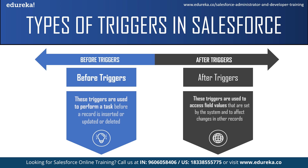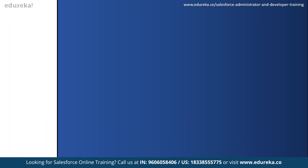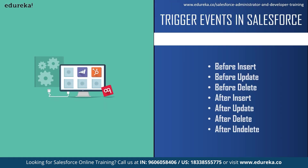After triggers are read-only — you cannot make any changes to them. So those were the two types of triggers in Salesforce. Now let us move on to understand what trigger events are. A trigger is a set of statements or a piece of code that can be executed on any of the following events.